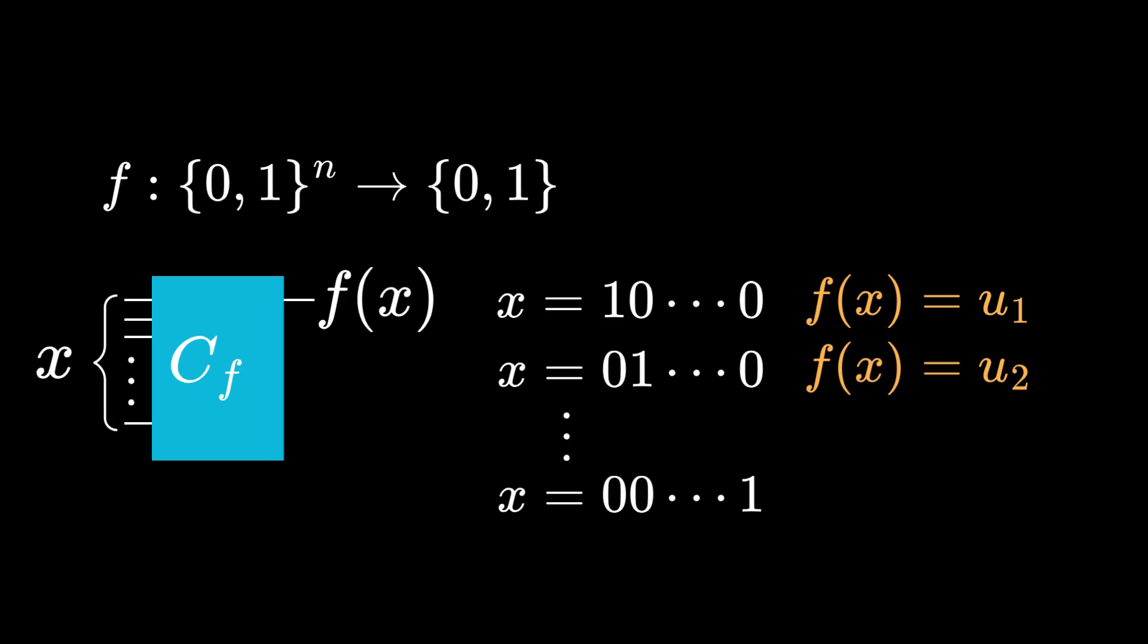If we continue this process for different x values, with 1 in the ith position and 0 elsewhere, then asking this from f gives us the ith component of u, so in total we need at least n queries from f to find u.